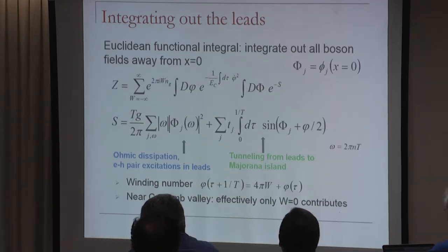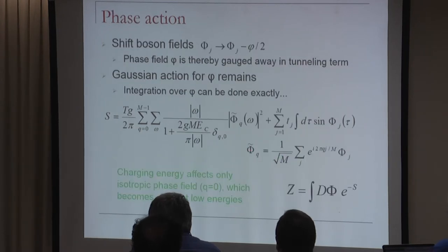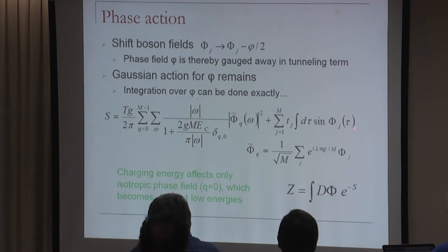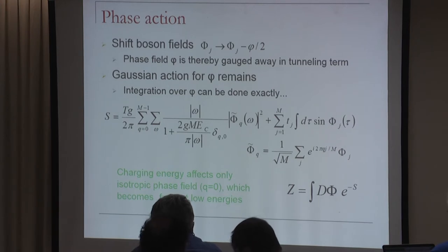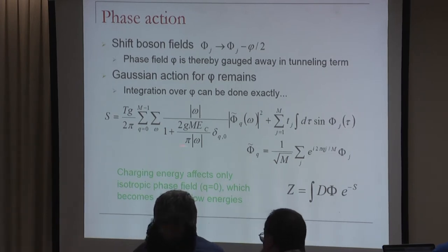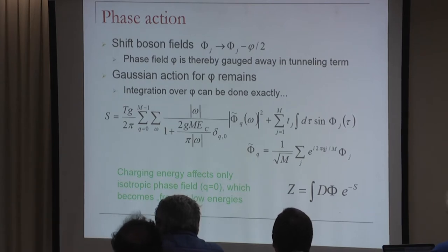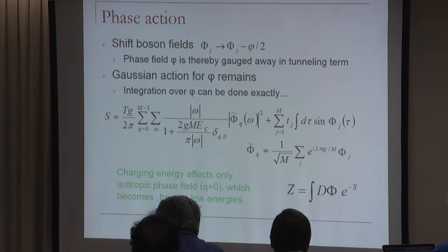We can integrate out all bosonic fields away from the contact point since it's a Gaussian theory, yielding a purely bosonic action for phi_j(tau) fields with tau as imaginary time. The total phase field phi_1 + phi_2 + ... is conjugate to the charge on the island, which is pinned by the charging energy—meaning the conjugate field widely fluctuates. Below the charging energy this mode becomes free, manifesting strong charging effects: tunneling onto the island must be followed within a time of order 1/E_C by tunneling out, but you can tunnel out through any lead.